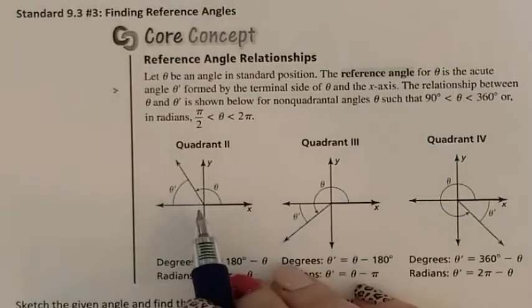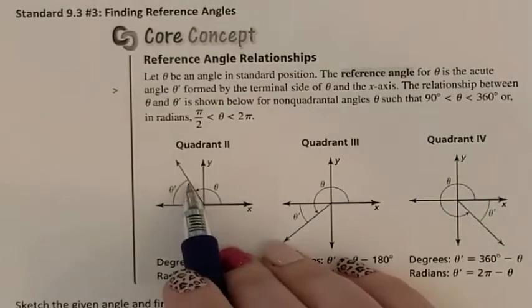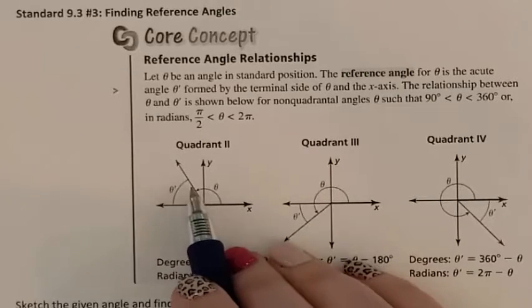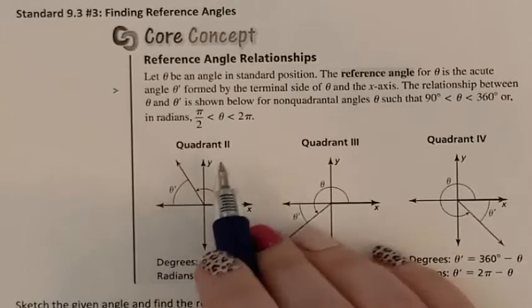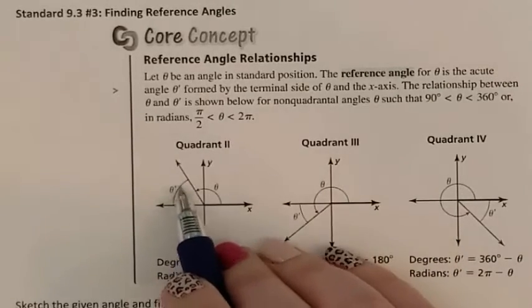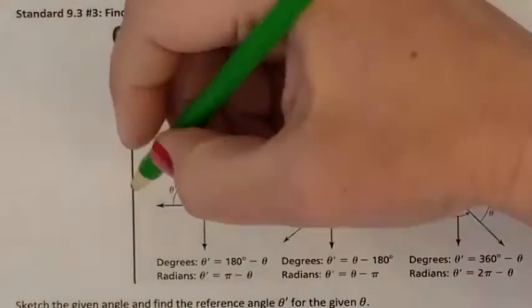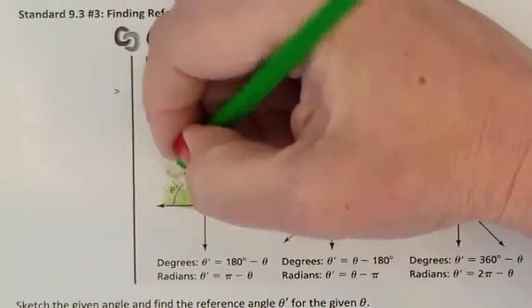When looking for a reference angle, you are just trying to see what is the degree from the line you're given to the closest x-axis. So if you're in quadrant 2, you're trying to find the closest x-axis, which would be right here. So you would be finding this angle measure.